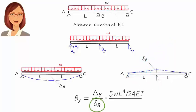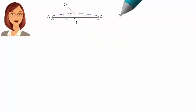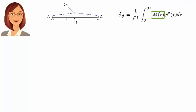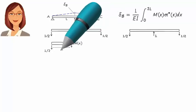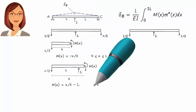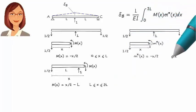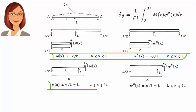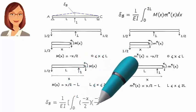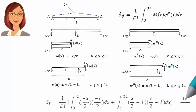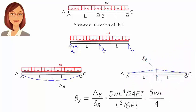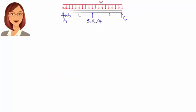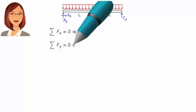To determine the other displacement delta_B, we use this diagram. Delta_B can be written as the integral where M represents bending moment in the beam due to the unit load, and M* represents bending moment due to a virtual unit load. We are going to have two identical moment equations in this case, since the real and virtual loads are the same. Solving for delta_B, we get the result. Now we can determine By. Once By is calculated, the statically indeterminate beam becomes statically determinate, meaning we can now easily determine the remaining support reactions using the static equilibrium equations.